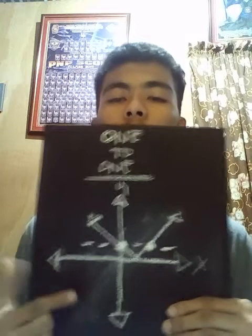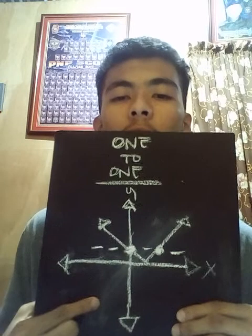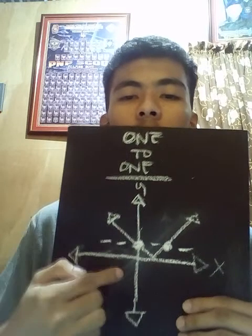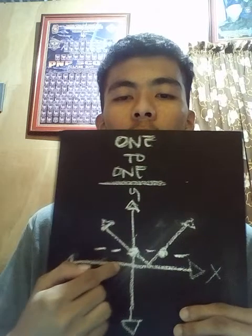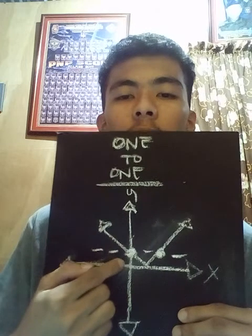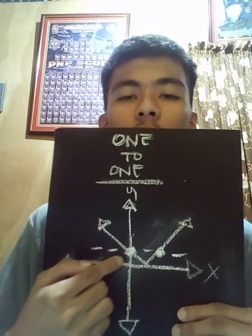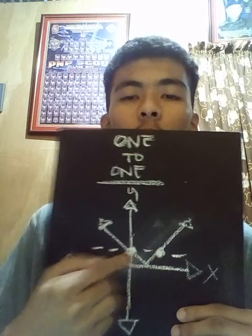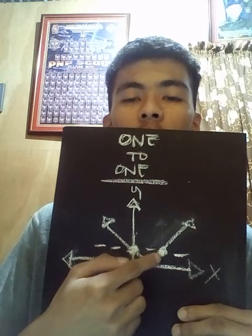This is an example of a not one-to-one function. As you can see in the drawing, the horizontal line corresponds to two points — more than one point.